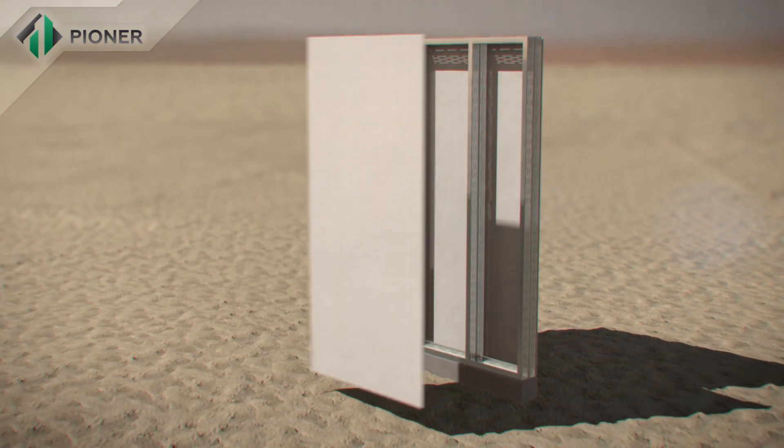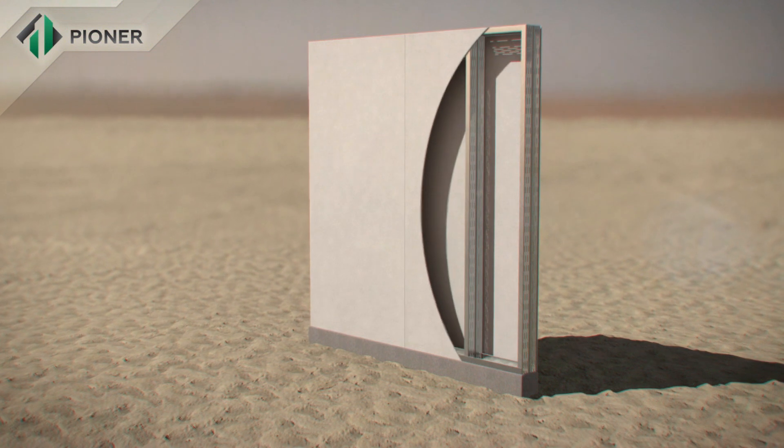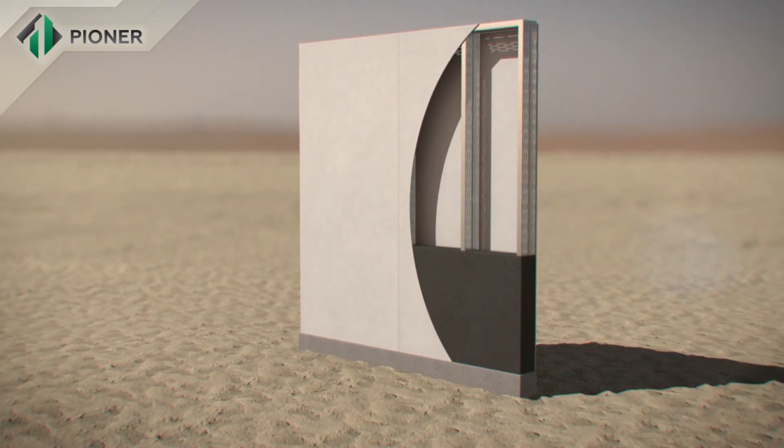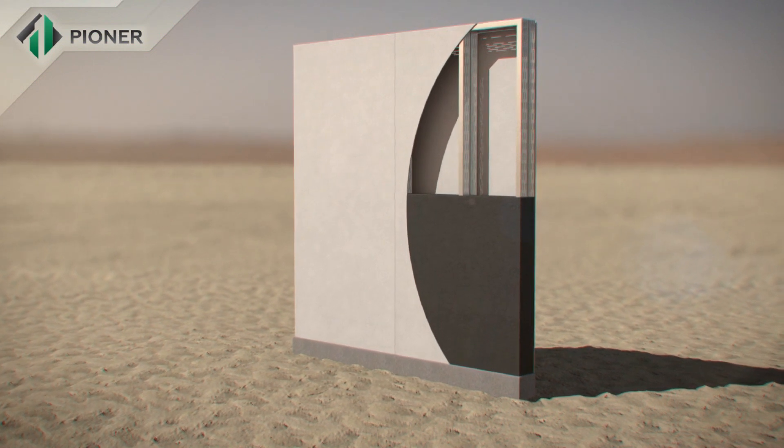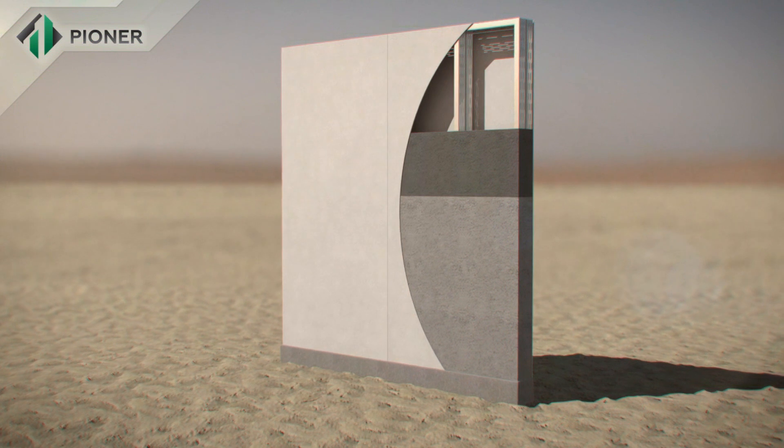A metal frame composed of bent galvanized profile which is mounted on a prepared foundation is the basis of Pioneer construction technology. Heavy combined fiber cement panels serve as permanent cast framework inside and outside of the wall.